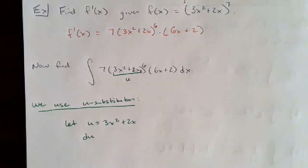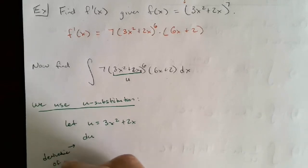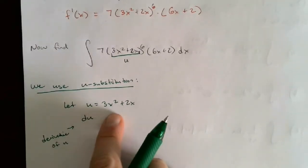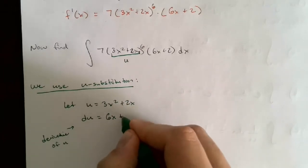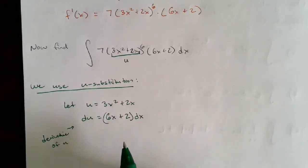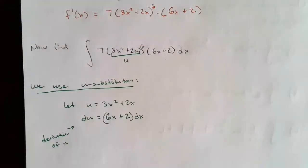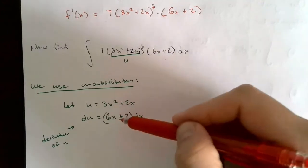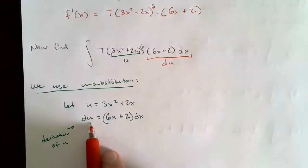Once I have u, I need to find du, because everything inside the integral must be in terms of u. The derivative of u = 3x² + 2x gives du = (6x + 2) dx. Looking back at my integral, I have a 6x + 2 dx right there, so that du replaces that entire piece.